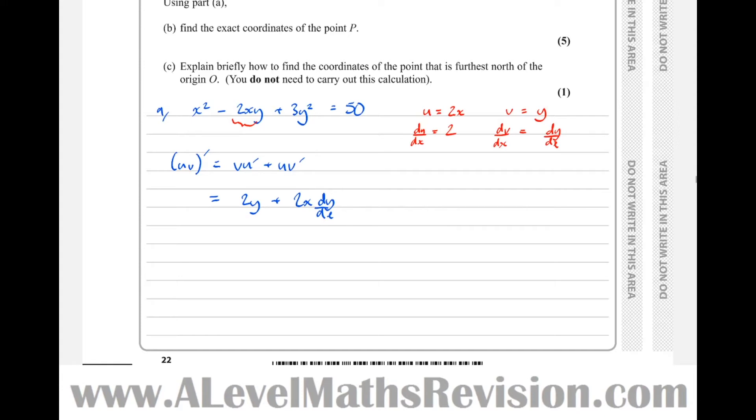Going through, I get 2x minus, so minus what I've just got, minus 2y minus 2x dy by dx, plus 6y. Must remember when differentiating y to times by dy by dx, equals the differential of 50, which is 0.